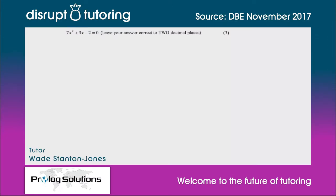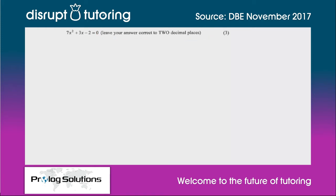Hey guys, Wade here from Disrupt Tutoring. It's great to join you today. I'm going to be taking you through a question on the quadratic formula which was taken from the November 2017 DBE exam. The question is: 7x² + 3x - 2 = 0. Leave your answer correct to two decimal places.